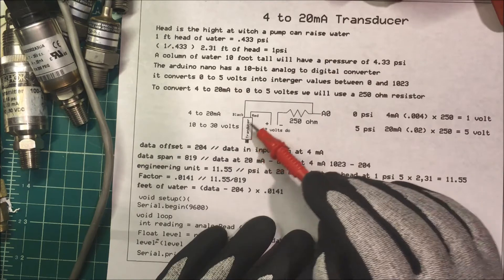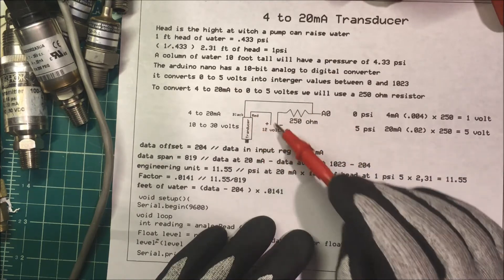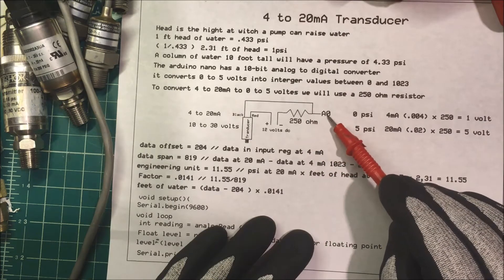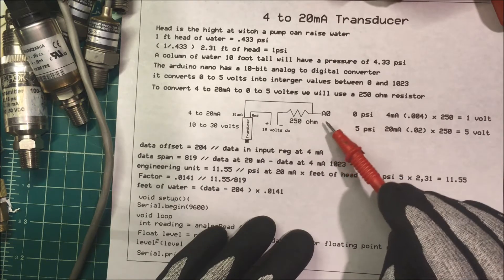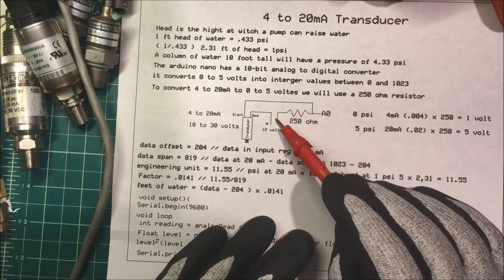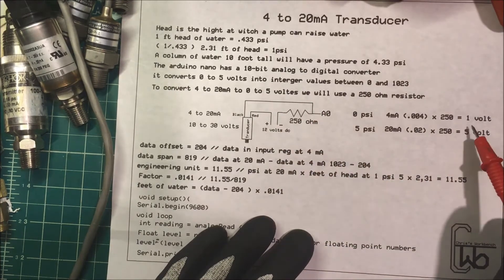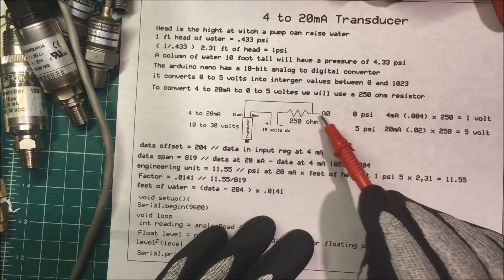Now we put the transducer in this loop here, it's just in series with the 250 ohm resistor, and then we have our analog input over here. Now if we run 4 milliamps through that loop, 4 times 250 ohms is going to be equal to 1 volt. We're going to drop 1 volt across here.